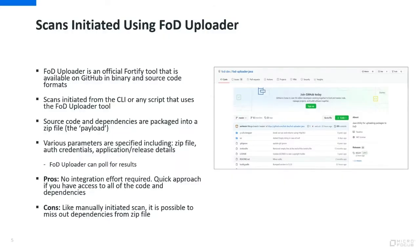With a scan initiated from FOD Uploader, you're actually using a tool that we publish on GitHub, available in binary and source code formats. The scan is initiated from the command line interface or from a script you've created. Again, you have to zip together all the code and dependencies into the payload. When you use the tool, you specify parameters including the zip file name, authorization credentials — typically an API key and secret — and the application release details targeting where you want the results to go on the FOD tenant. You can also get FOD Uploader to poll for the results to potentially integrate that into your tooling.